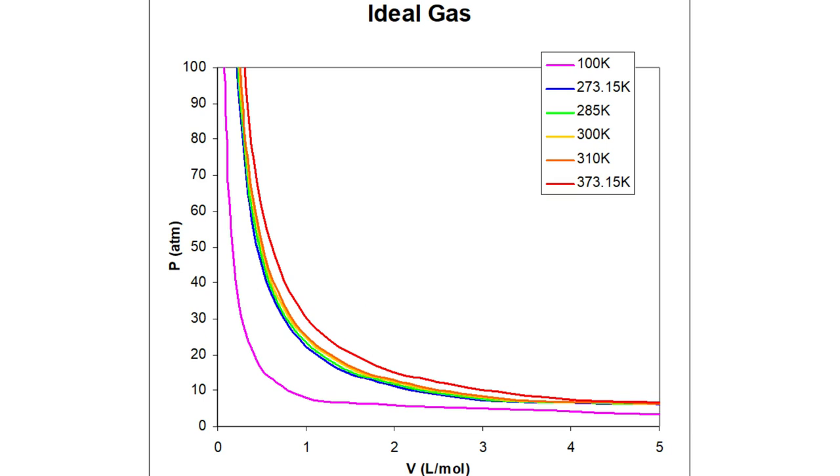Each of these curves is called an isotherm, which is a word that means same temperature, because each of them shows us how the pressure and volume are related at a single temperature. So, what the shape of these curves tells us is that as we raise the pressure, the volume decreases. That's pretty much what we expect from Boyle's law.